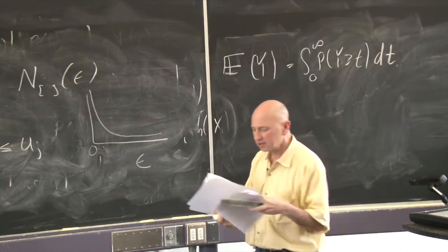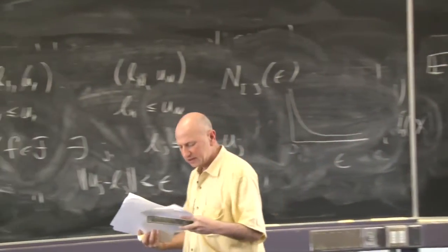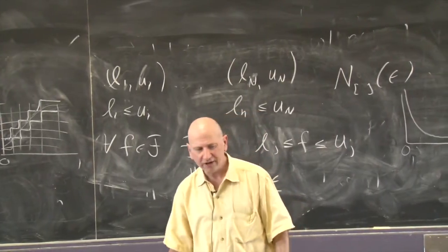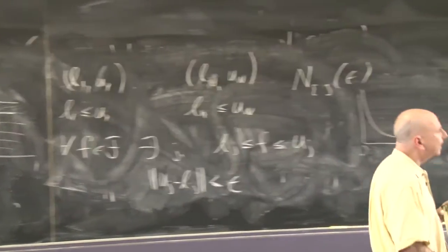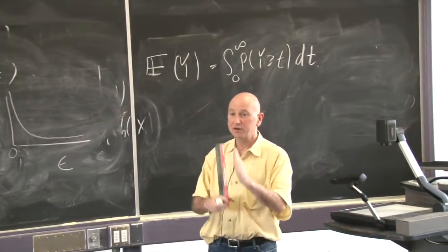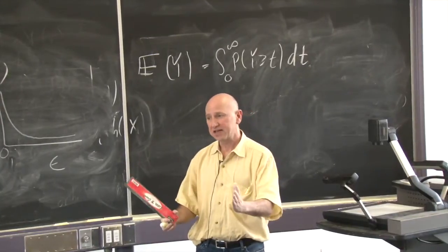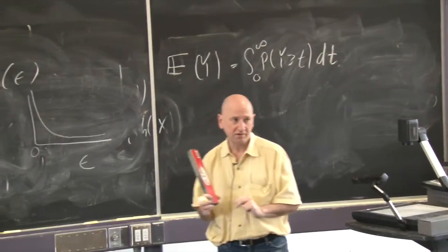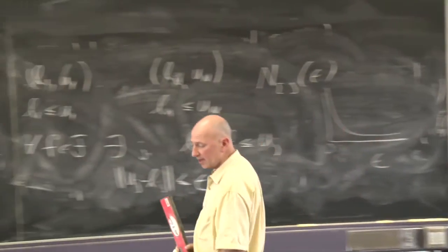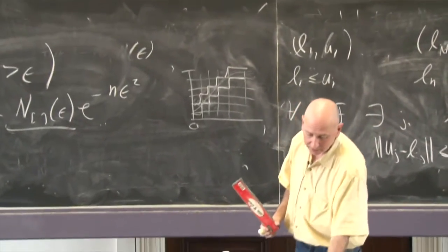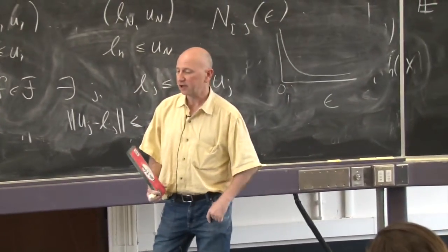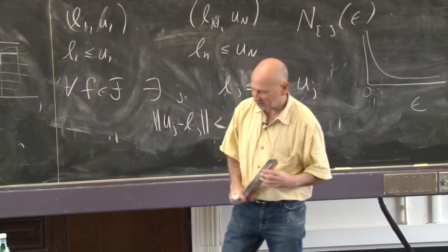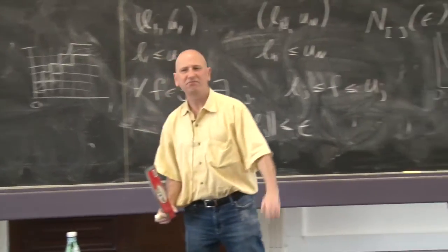The last thing in the notes is something called Talagrand's inequality. It's optional, but if you want to look through it: if you think of the VC inequality as an extension of Hoeffding's inequality to infinite sets, you could also ask if there's an extension of Bernstein's inequality to infinite sets. The answer is yes - it's Talagrand's inequality. Talagrand's inequality is very famous, very recent, and was a very big breakthrough in probability theory. It gets used all the time now in many places. There are whole books written about it.